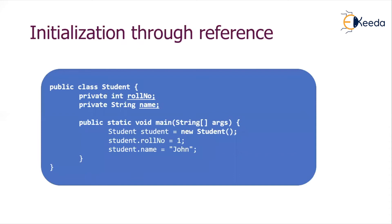When we say initialization through reference, this is the way how we create a class. There is a class named Student with two properties: roll number and name. We create a reference of the Student class, and we can initialize the object's properties using that reference. Using the dot operator, we can access the properties, and through reference, initialization of the object can be done.